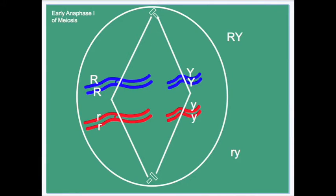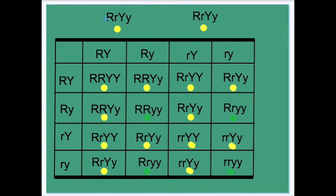Let's take a look at these diagrams which explain what independent assortment means. This diagram illustrates the meaning of independent assortment. In Mendel's F1, the peas were heterozygous for round and yellow.